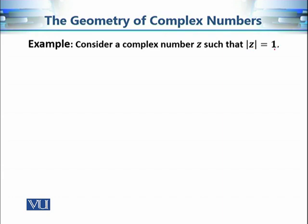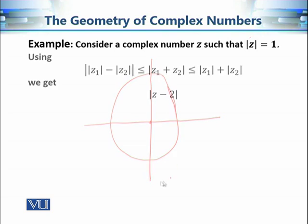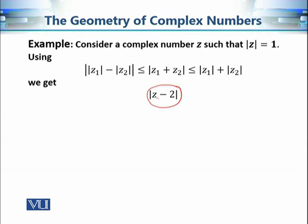Now consider a complex number z such that |z| = 1. These complex numbers lie in the complex plane at distance 1 from the origin — that is, they form a circle of radius 1. If we want to calculate an upper bound for |z − 2|, using the triangle inequality: |z − 2| ≤ |z| + |−2| = |z| + 2 = 1 + 2 = 3. So the modulus of z − 2 is always less than or equal to 3.